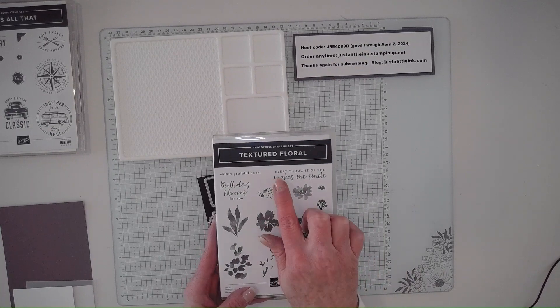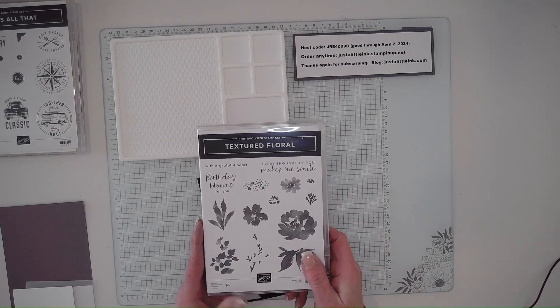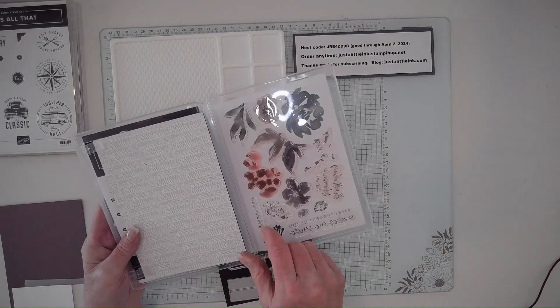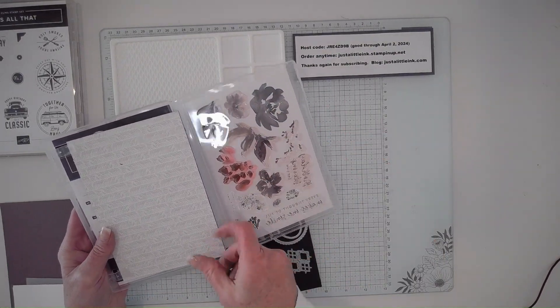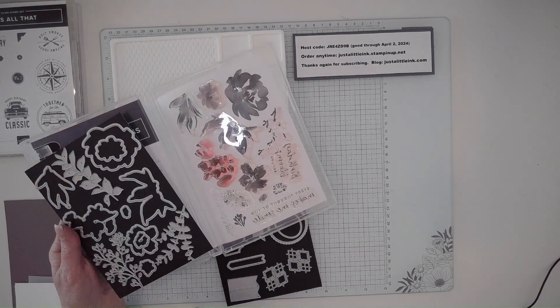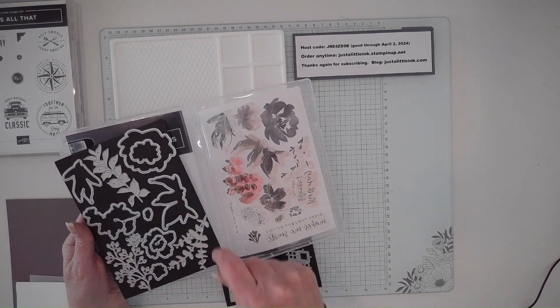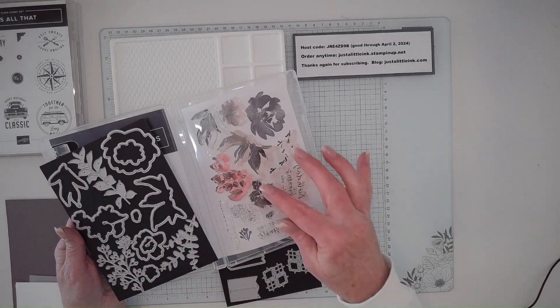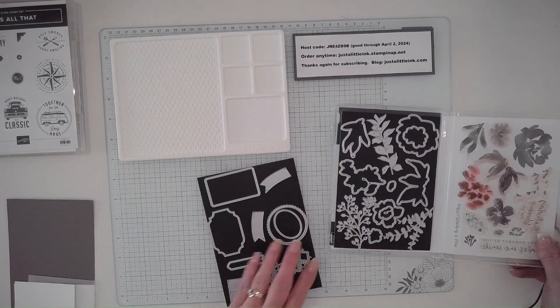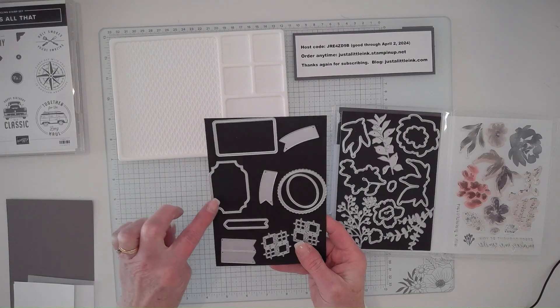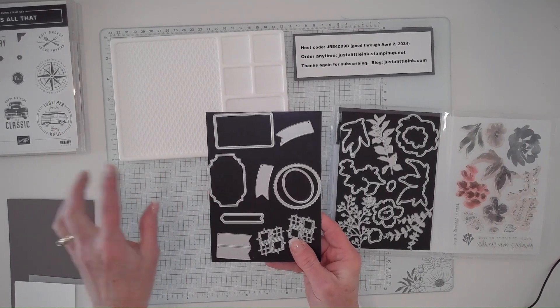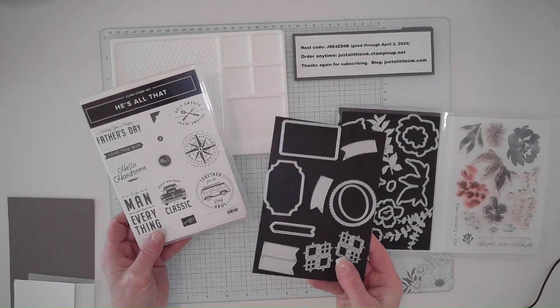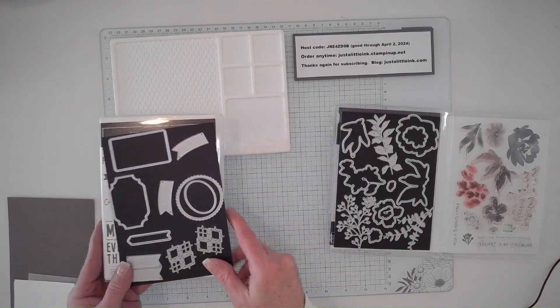I'm using the textured floral bundle. It comes with a photopolymer stamp set, and I put mine on magnetic sheets. It's a wonderful two-step stamp set with coordinating dies. I'm also going to use the frame from the He's All That dies. Both of these can be found in our annual catalog.